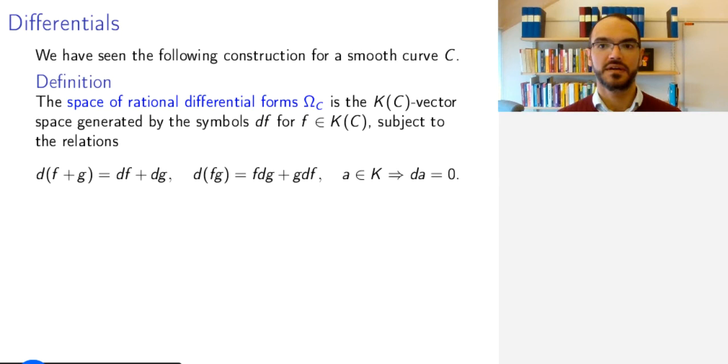For a smooth curve C, when we discussed the Riemann-Roch theorem, we talked about the space of rational differential forms. This was a vector space over the function field of the curve, generated by abstract symbols df for f in the rational function field, subject to these relations.